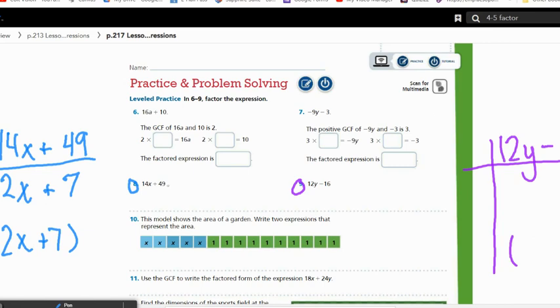So then the answer here would be 7 times the quantity 2x plus 7. And that would be equivalent. And I can check it, because 7 times 2 is 14x, and 7 times 7 is 49, and there's a plus sign between them. So I checked my work and it worked.